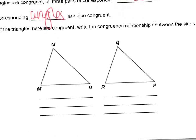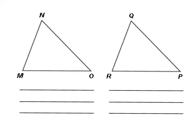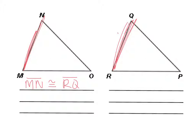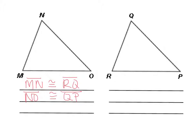If I know that these two triangles are congruent, that means they have the same size and the same shape. Then I know that side MN is congruent to side RQ, because MN is on the left and RQ is on the left. Moving around and going to the right, I also know that NO is congruent to QP. And the last side: OM is congruent to PR. Those are our congruent sides.